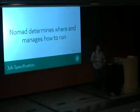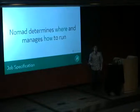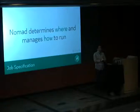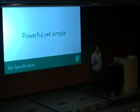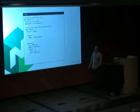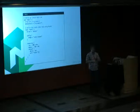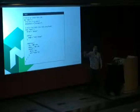The job specification declares what to run — this is a common trend in HashiCorp tools. We're big believers in declarative configuration. It doesn't say where or how to run it — that's Nomad's job. You say what you want and Nomad makes it happen: which server has space, and how to actually launch it. It's a powerful concept — abstracting application deployment away while keeping it relatively simple.